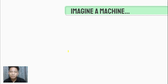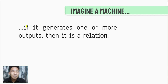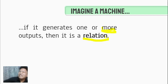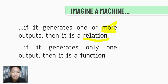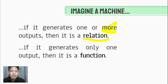Let us imagine a machine. A machine requires an input and it produces an output. If it generates one or more outputs for one input, then it is a relation. While if a machine generates only one output — say, though you have three inputs, still the machine generated only one output — then that illustrates a function.